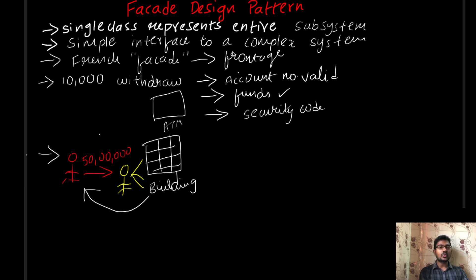Simple interface for complex system. Another example is suppose if you are trying to build a building. For example, that building consists of 10 floors and each floor should contain two or three rooms.